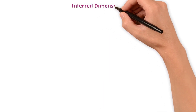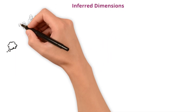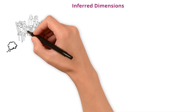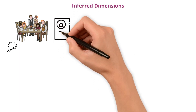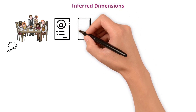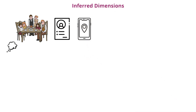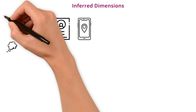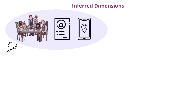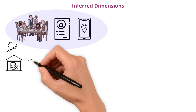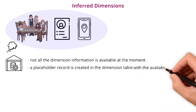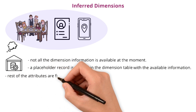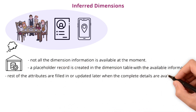Last one: inferred dimensions. Imagine you are at a party and meet someone new, but you only get their first name and a few interests. You don't have their full profile yet — where they work, their last name, or other details. In your contact list, you create a placeholder for this person, intending to fill in the complete information when you learn more about them. In the world of data warehousing, inferred dimensions work similarly. When a transaction occurs and not all the dimension information is available at the moment, a placeholder record is created in the dimension table with the available information, and the rest of the attributes are filled in or updated later when the complete details are available.